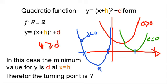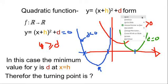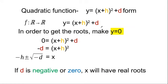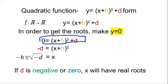To sketch this quadratic function, you need to know the turning point — we now know how to find that. To find the roots, if they exist, you set the function equal to zero. So when y equals zero, you take d to the other side — d becomes negative on the other side — giving negative d equals x plus h squared. Taking square roots of both sides: x plus h equals plus or minus the square root of minus d.